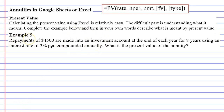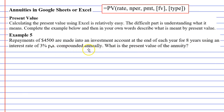In example 5, repayments of $4,500 are made into an investment account at the end of each year for 8 years using an interest rate of 3% per annum compounded annually, and it wants us to calculate the present value of the annuity.